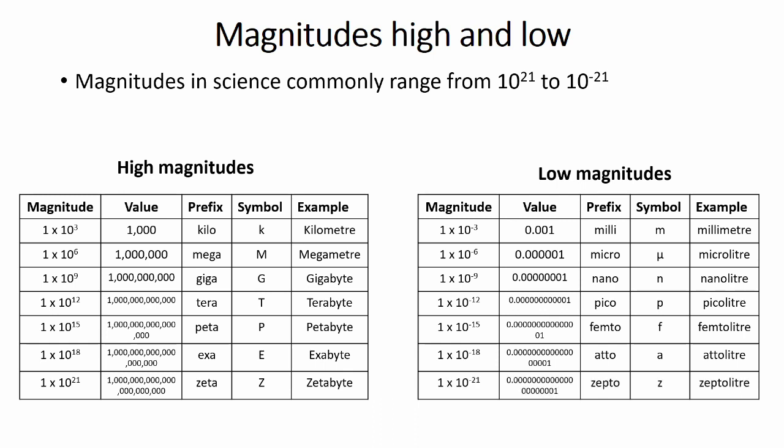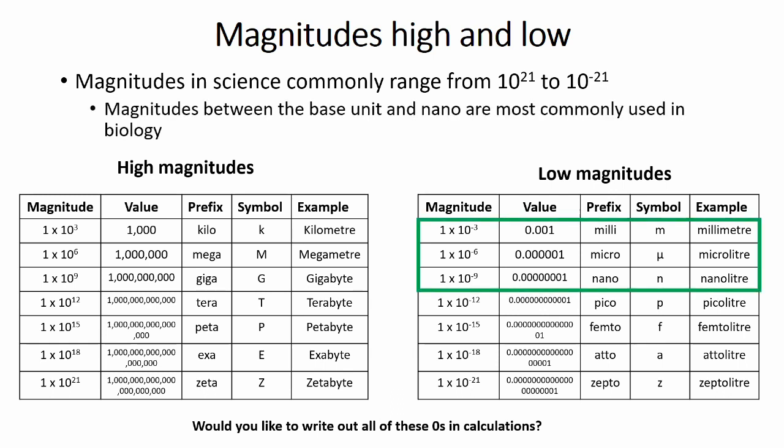As you can see from this table, these numbers can be either very big or very small and have a lot of zeros, which take time to say or write and will be hard to keep track of in calculations. These magnitudes and associated names make these numbers easier for us to use in real life. Biology commonly uses magnitudes between the base unit and nano, with a few instances of kilo and pico being used.